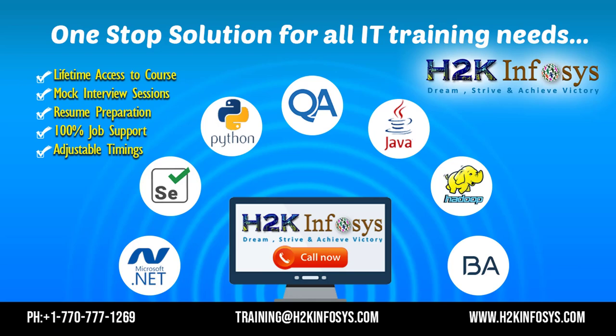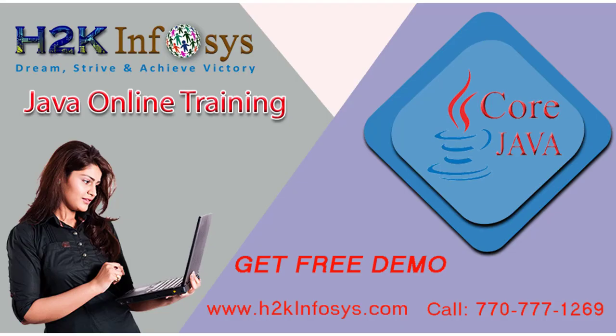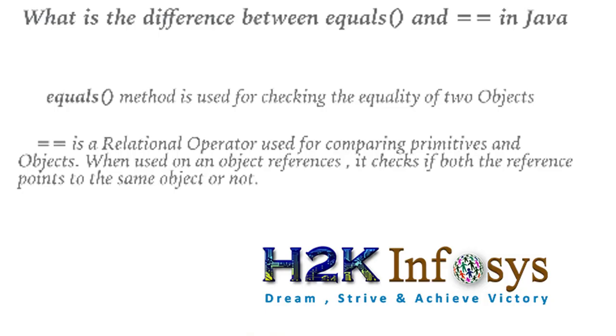Hello everyone, welcome back. Today we are going to talk about the difference between equals and double equals in Java. The equals method is used for checking the equality of two objects, and double equals is a relational operator used for comparing primitives and objects as well. When used on an object reference, it checks if both references point to the same object or not. Let's see a practical example to understand the concept better.